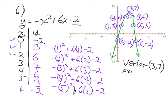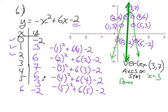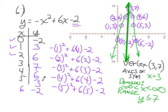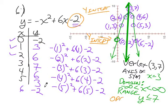This parabola opened down and has a vertex at three comma three. Everything to the right of x equals three looks like everything to the left. Go one step right of the vertex, y is 6; one step left, y is 6. Go two steps right, y is 3; two steps left, y is 3. It has a y-intercept at zero comma negative two — just look at the constant at the end of the expression. It opens down and has a range and domain.